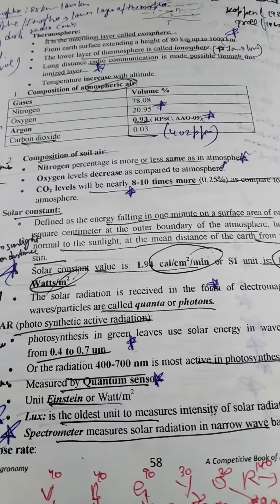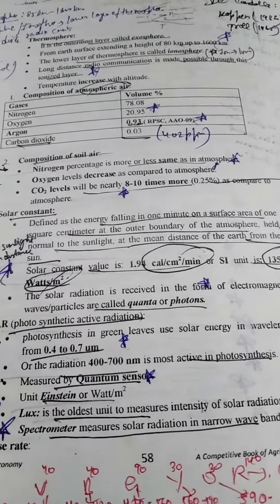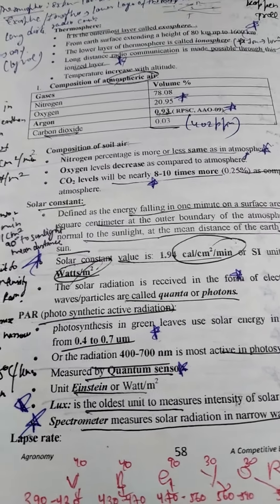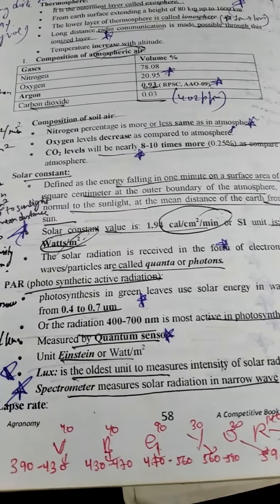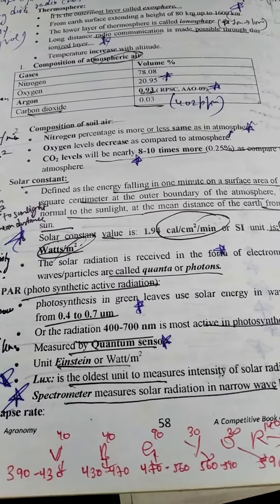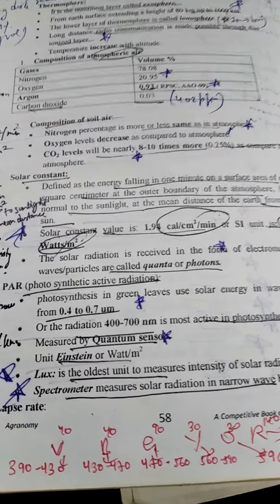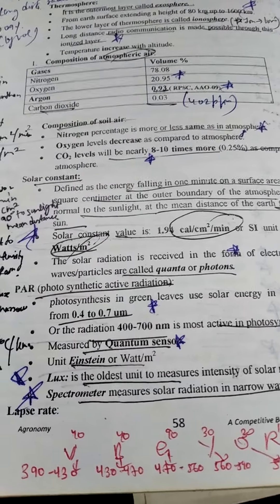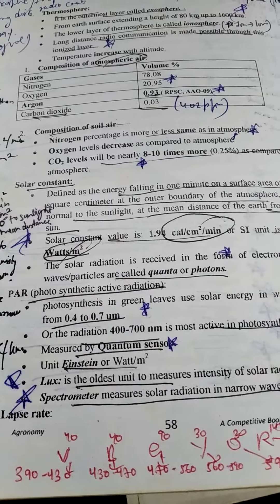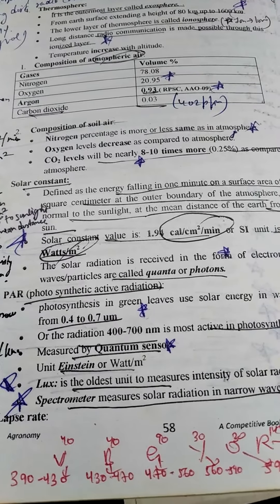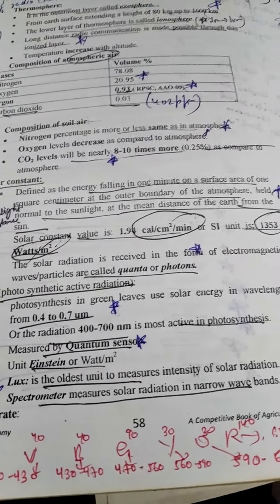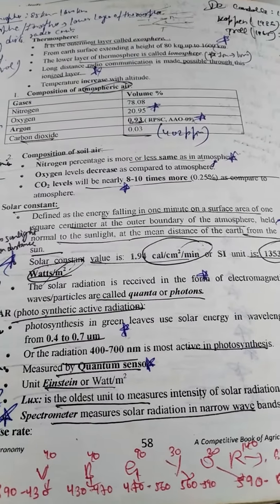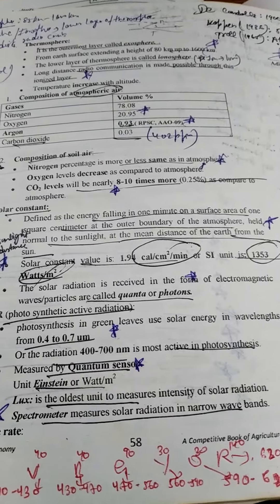Solar radiation is received in the form of electromagnetic particles called quanta or photons. Photosynthetically active radiation has a wavelength of 0.4 to 0.7 micrometers. We measure photosynthetically active radiation using a quantum sensor. The unit of photosynthetically active radiation is Einstein or watt per meter square. The oldest unit to measure intensity of solar radiation is lux. A spectrometer measures solar radiation in narrow wavelengths.